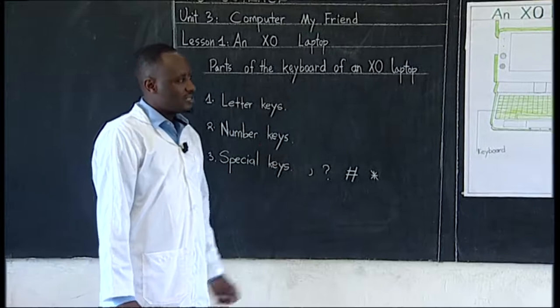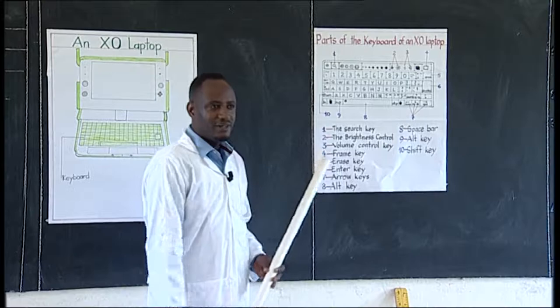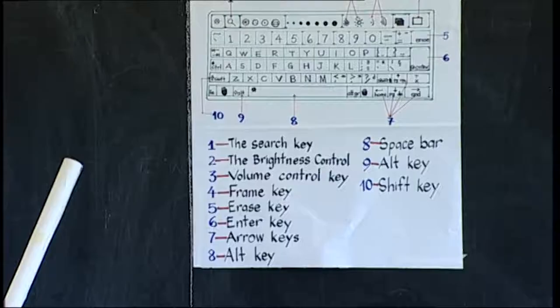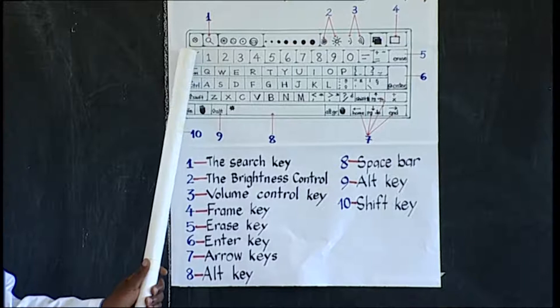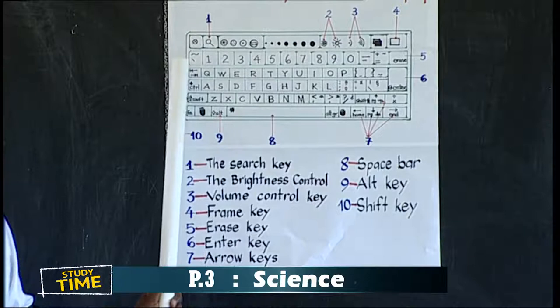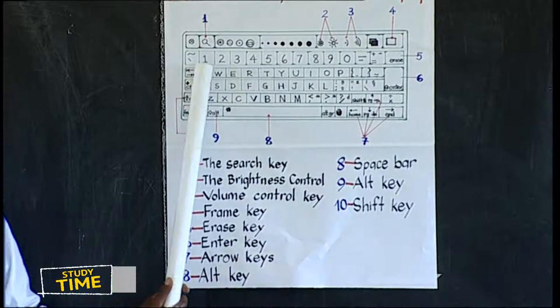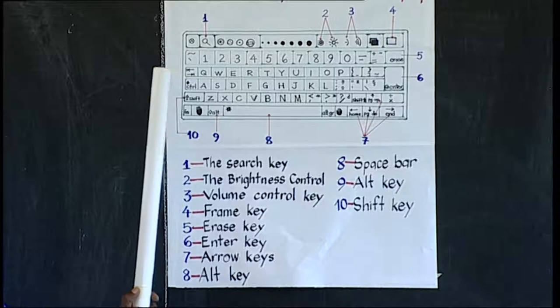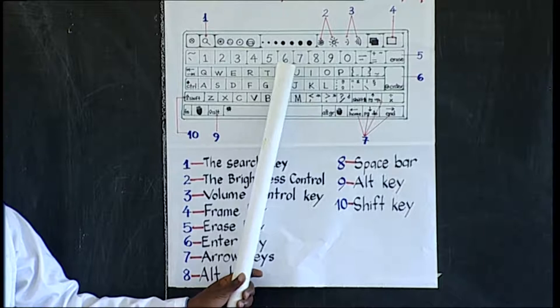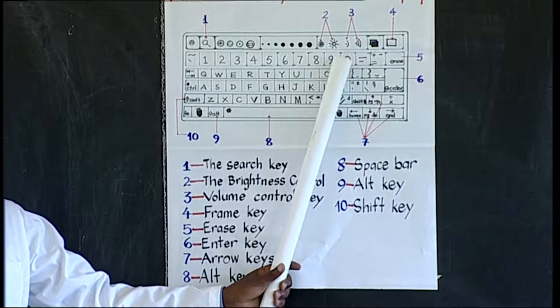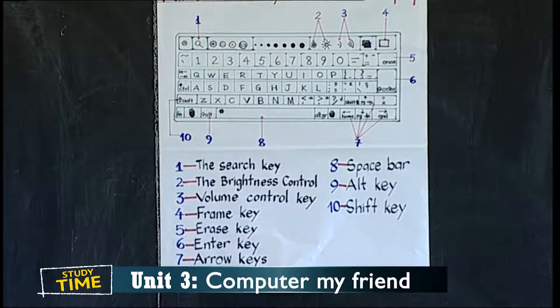Let's all have our eyes on the diagram. We have this line here where we find our numbers. Children, can you see the numbers very well? We have number one, two, three, four, five, six, seven, eight, nine, and zero. Remember, we said that we can't have 10 or 11, because those numbers can be formed using the already existing numbers here.